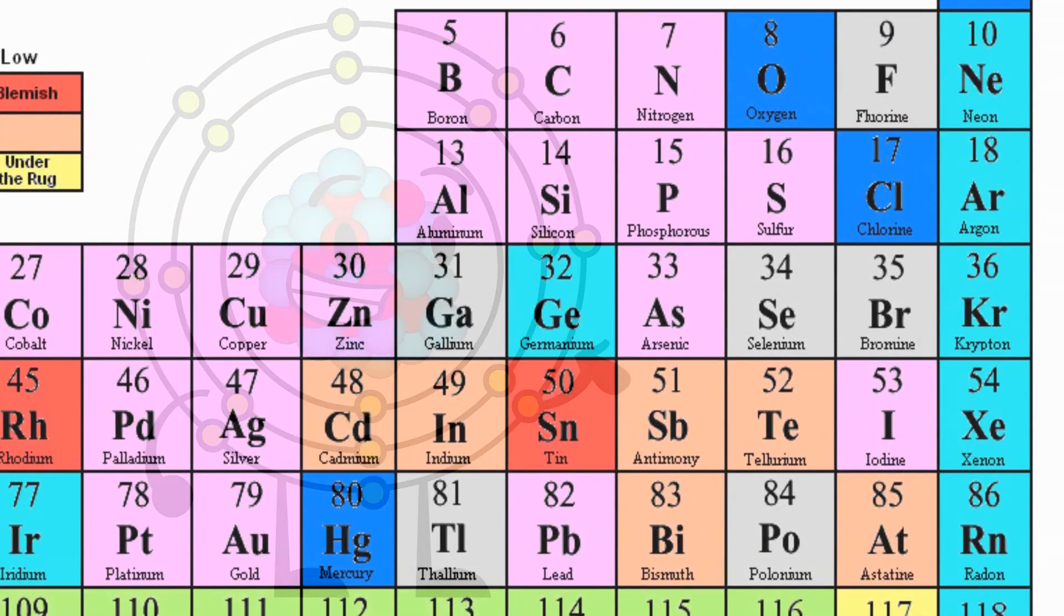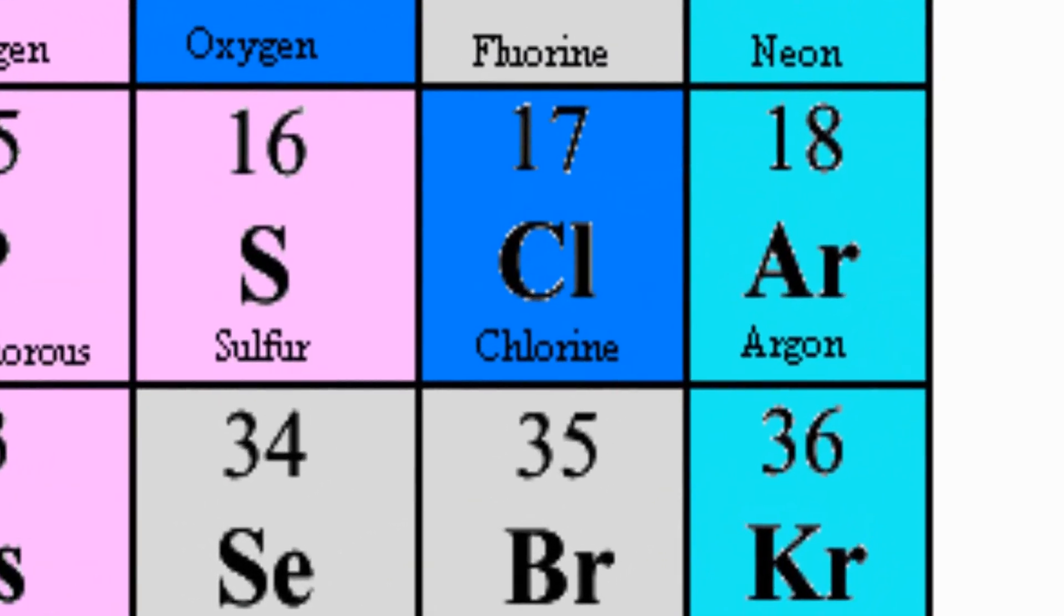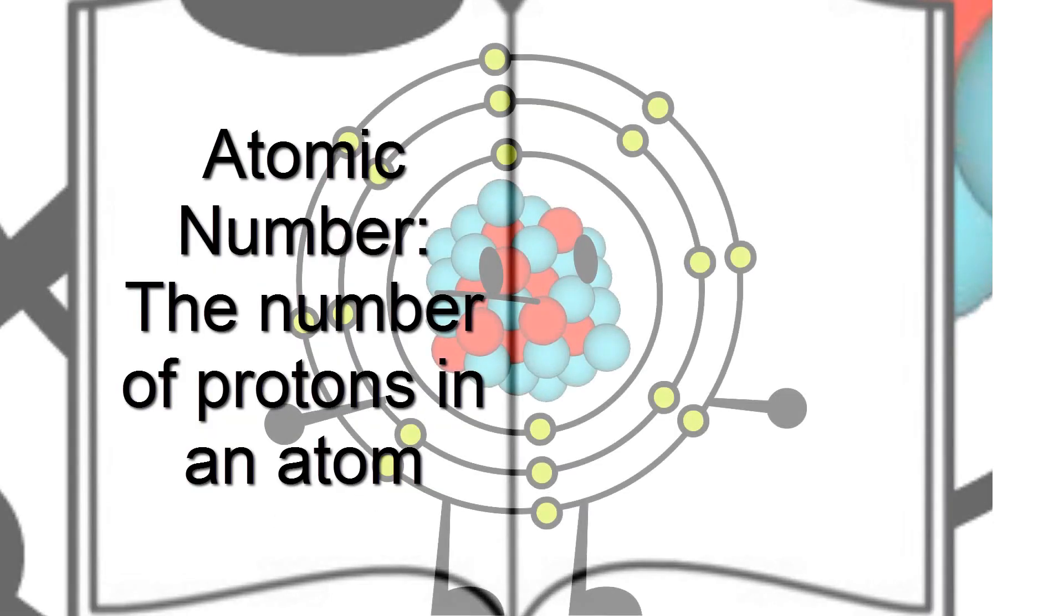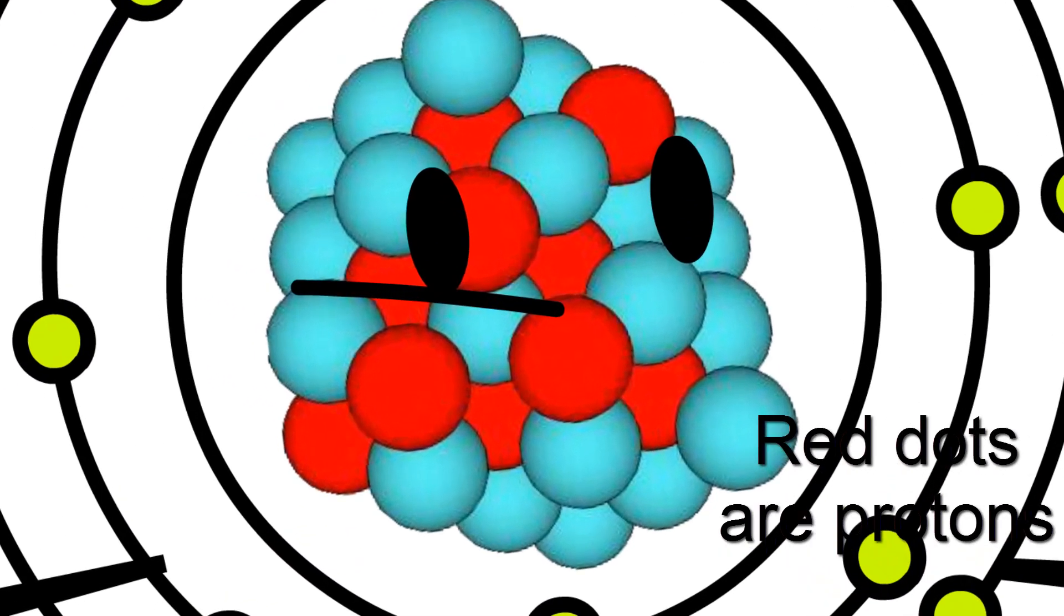Now, if you look at a periodic table, you can see that my atomic number is 18. The definition for atomic number is the number of protons in an atom, which means there are 18 protons in me.